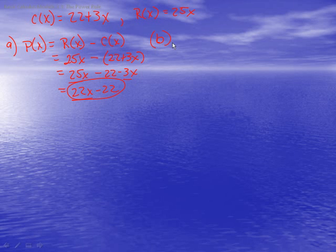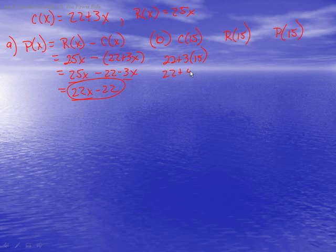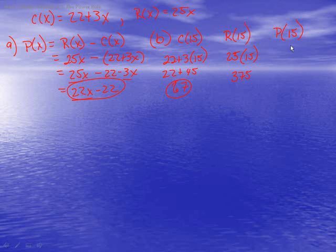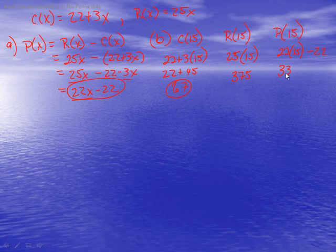Part B asks us to find c(15), r(15), and p(15). For c(15): 22 + 3(15) = 22 + 45 = 67. For r(15): 25 times 15 = 375. For p(15): 22(15) - 22 = 330 - 22 = 308. That gives us these answers.